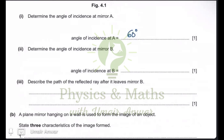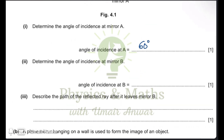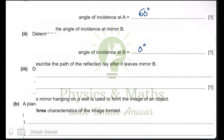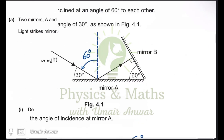For the angle of incidence at mirror B: the light reflected from mirror A strikes mirror B at an angle of 90 degrees with the surface of mirror B. When we draw a normal, it is again perpendicular to the surface of the mirror, so the angle between this ray and the normal is zero degrees. The answer for this part is zero degrees.